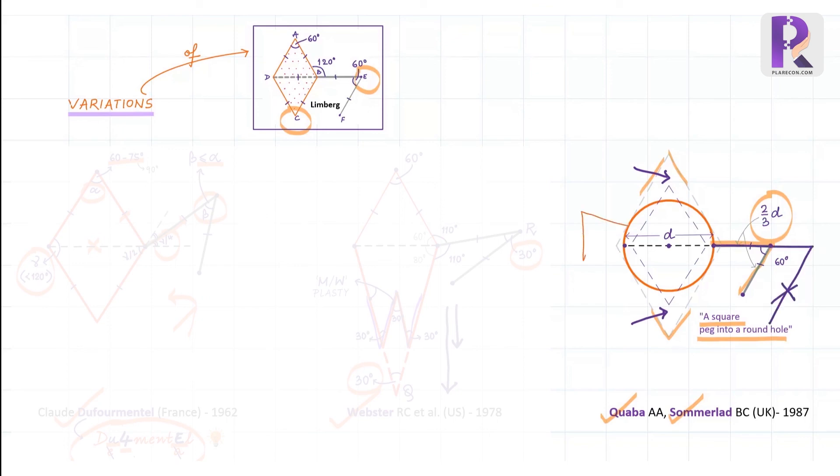Moreover, this flap could be planned at any direction around the circular defect, and hence the flap side primary closure suture line could be oriented in any favorable direction easily.